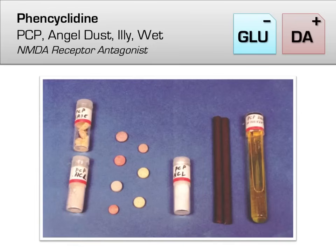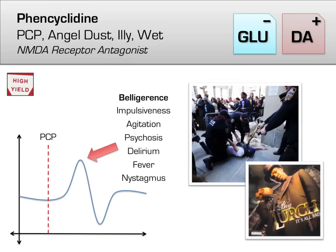PCP is almost guaranteed to show up on a test somewhere, so pay close attention. PCP has significant hallucinatory effects, but is better known for clinically inducing belligerence, impulsiveness, agitation, psychosis, and delirium. On boards, there is a classic vignette about a patient who is so agitated and belligerent that it takes five cops or nurses to restrain him. If you see this, always think PCP.